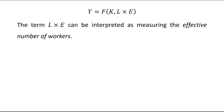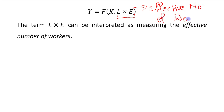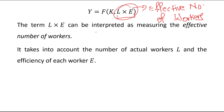The term L times E can be interpreted as measuring the effective number of workers. It takes into account the number of actual workers, denoted by L, and the efficiency of each worker, denoted by E.